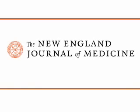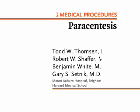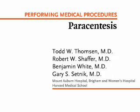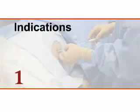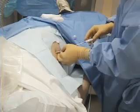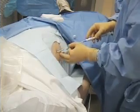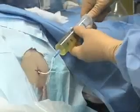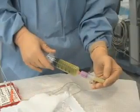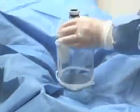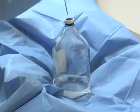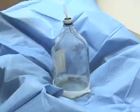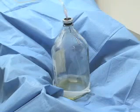This is a video in clinical medicine from the New England Journal of Medicine. Abdominal paracentesis is performed as a diagnostic procedure to establish the etiology of new onset ascites or to rule out spontaneous bacterial peritonitis in patients with pre-existing ascites. Large volume paracentesis is performed in hemodynamically stable patients with tense or refractory ascites to alleviate discomfort or respiratory compromise.